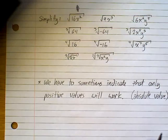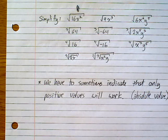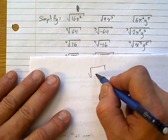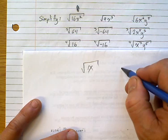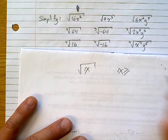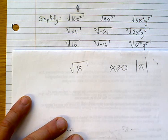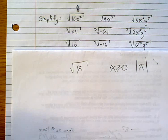Sometimes answers require absolute values. For example, √(x²) technically requires x to be greater than or equal to zero, which is expressed as the absolute value of x. We'll start looking at what we call restrictions — what values of x work and what don't — a little later. If you have any questions, do not forget to ask.